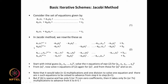Similarly, the second equation keeps a₂₂ x₂ on the left-hand side and moves all other terms to the right: b₂ - a₂₁ x₁ - a₂₃ x₃ - ... - a₂ₙ xₙ^k. For the last equation, the diagonal element aₙₙ is kept and all other terms are moved to the right. In each case, by rewriting the equations this way, we evaluate x₁, x₂, ..., xₙ using the previous iteration values and dividing by the diagonal element.